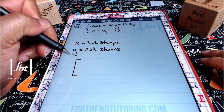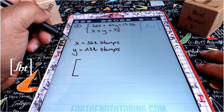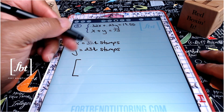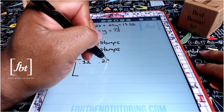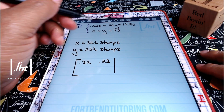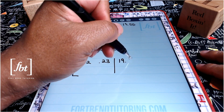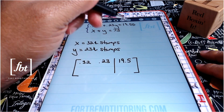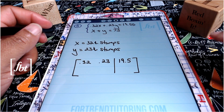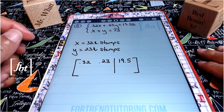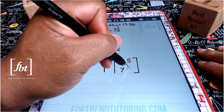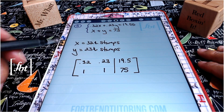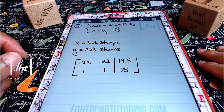Now that we have our system of equations written out, we can write our augmented matrix. Opening up our matrix, the coefficients for the first equation give us 0.32, then 0.23, our vertical bar, and then the constant 19.50. For the second equation, we have coefficients 1, 1, and then the constant 75. This is the result for our augmented matrix for problem number five — red box it.